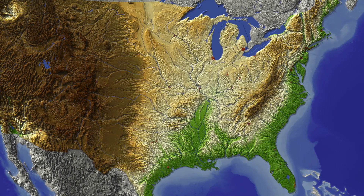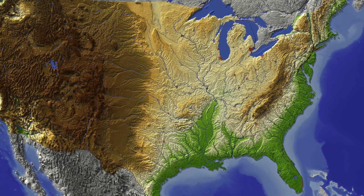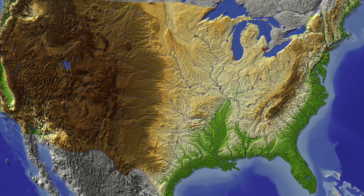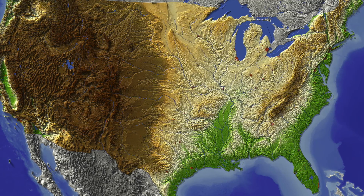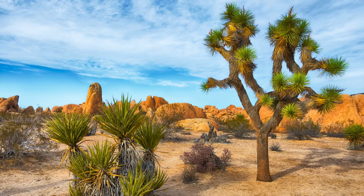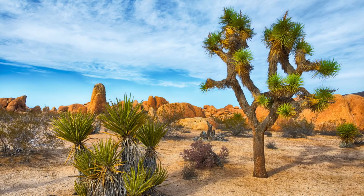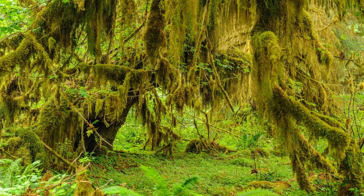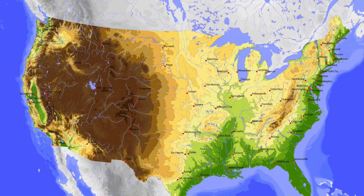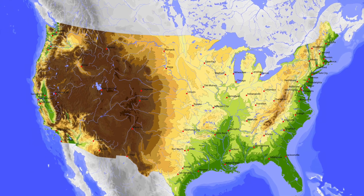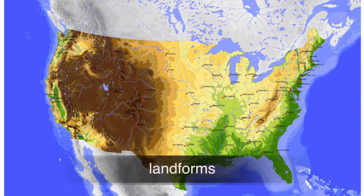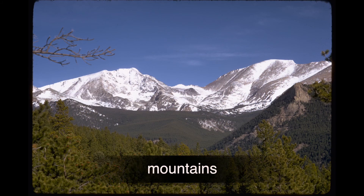Land comes in many different shapes. If you were to take a trip across the United States, you would see that the land changes from place to place. You might see a desert, which is a dry area of land where it doesn't rain very much. Another part of the country has a rainforest where it rains a lot. When we see the land change from place to place, we are seeing different landforms.